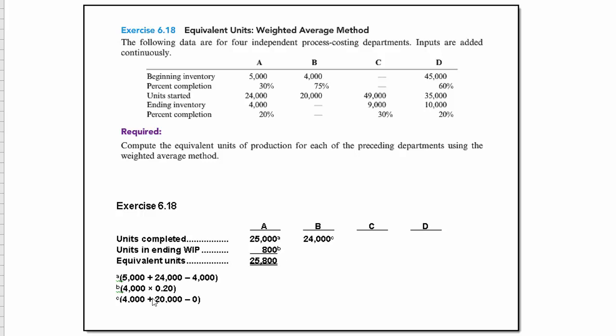How do we do that? We take the 4,000 times the 20 percent because it was only 20 percent completed. So the total equivalent units for Department A was 25,800.